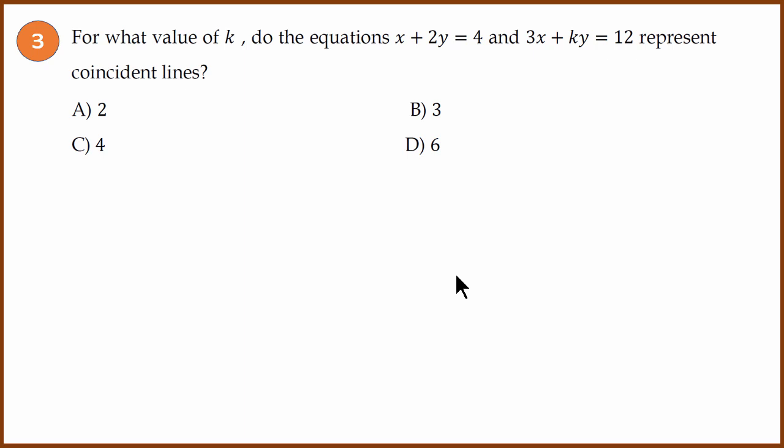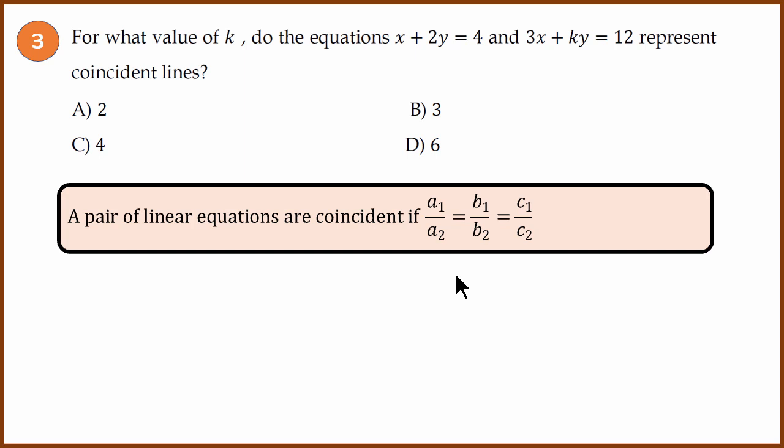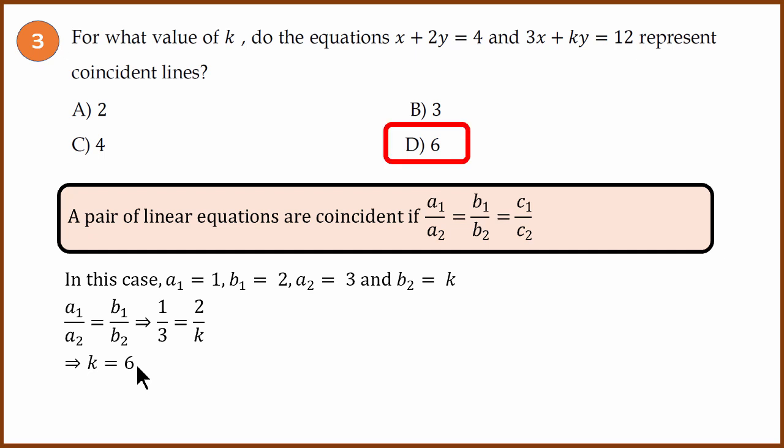Third question: For what value of k do the equations represent coincident lines? A pair of linear equations are coincident if a1/a2 = b1/b2 = c1/c2. In this case, a1 is 1, b1 is 2, a2 is 3, and b2 is k. Because they are coincident, we know that a1/a2 = b1/b2, which means 1/3 = 2/k, which means k = 6. Therefore the answer is 6, answer D.